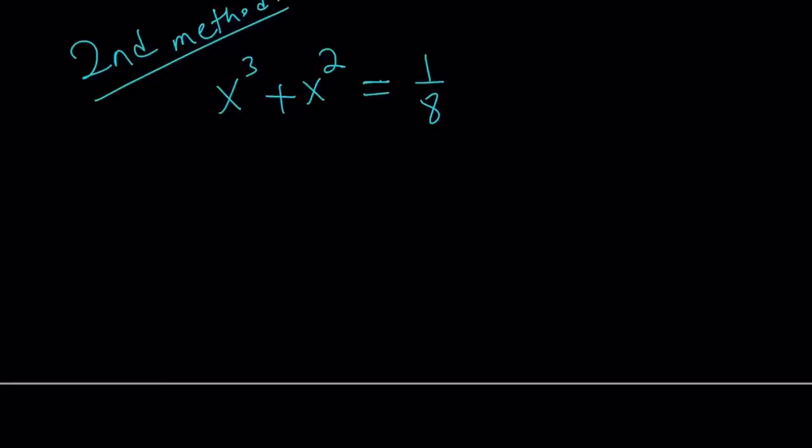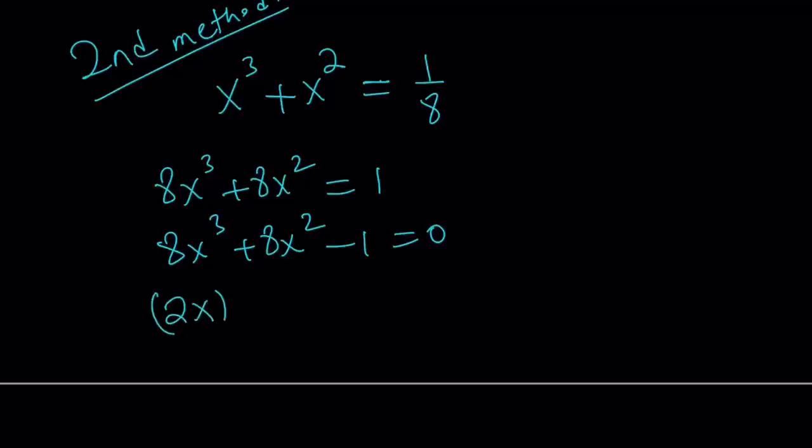Here's what we're going to do. Multiply both sides by 8. And so our equation looks a little better, no fractions. Put everything on the same side. Now, notice that 8x cubed is a perfect cube, so I can write it as 2x cubed. And 8x squared, we can write this as 2x squared, but that gives us 4x squared, so I've got to multiply it by 2. Minus 1 equals 0.